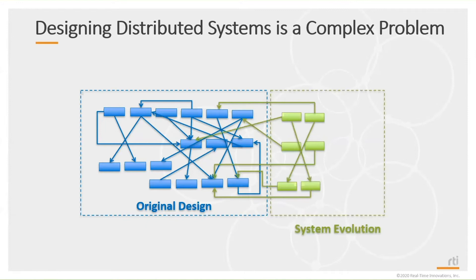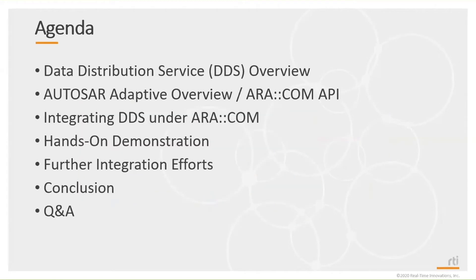But as you try to evolve the system, things can get quite messy. You end up having more nodes, more interfaces, more connections, and you may get lost. So today we're going to talk about two main technologies.